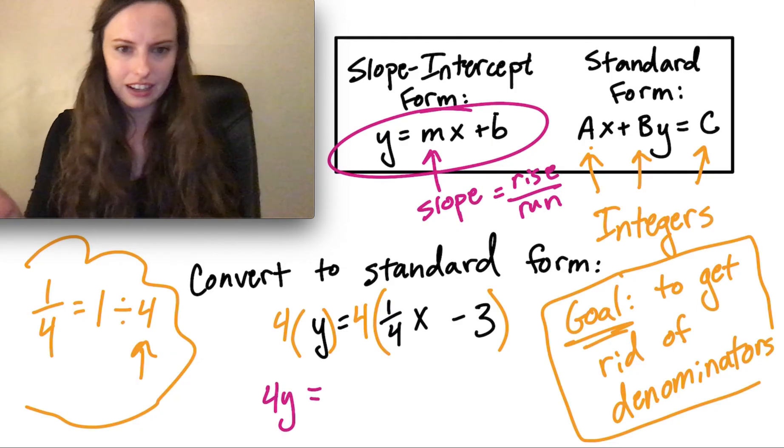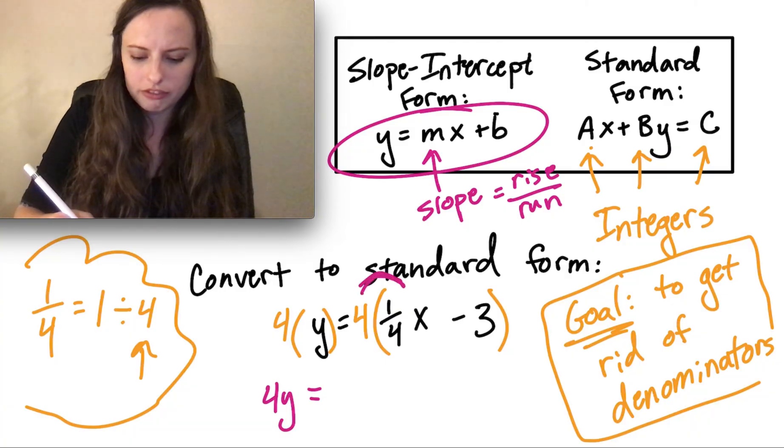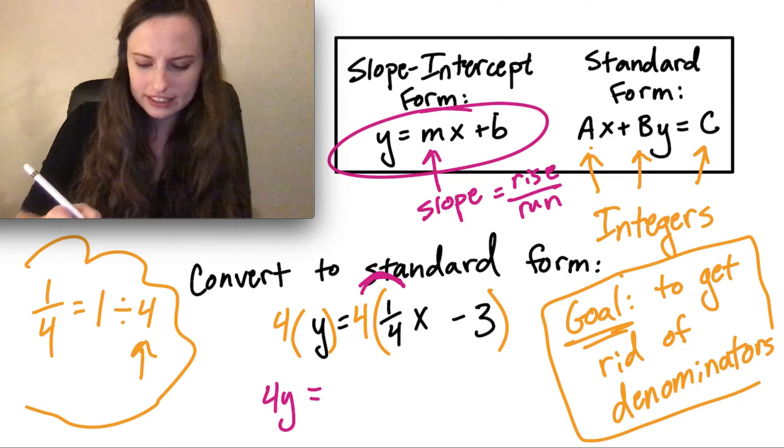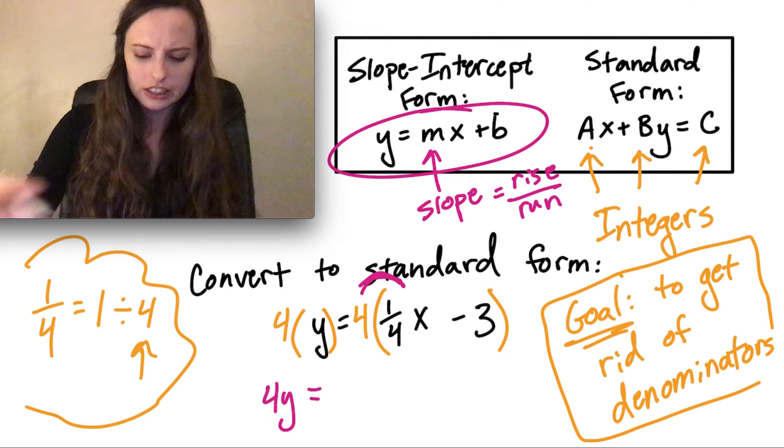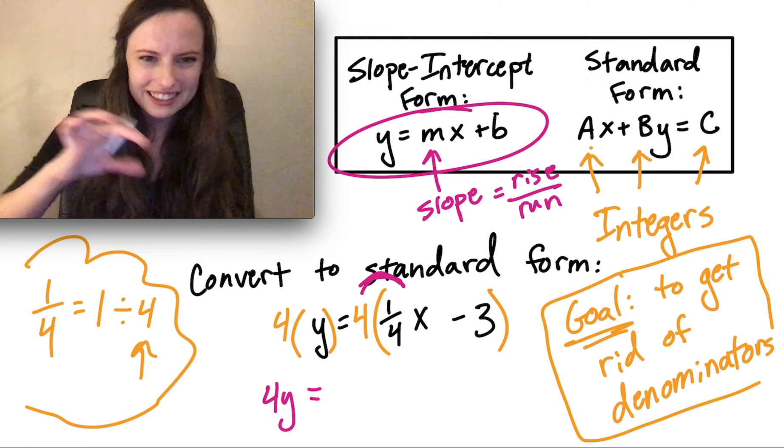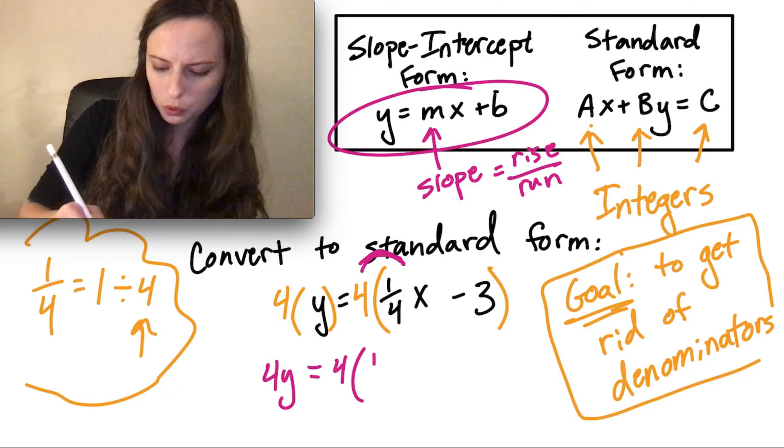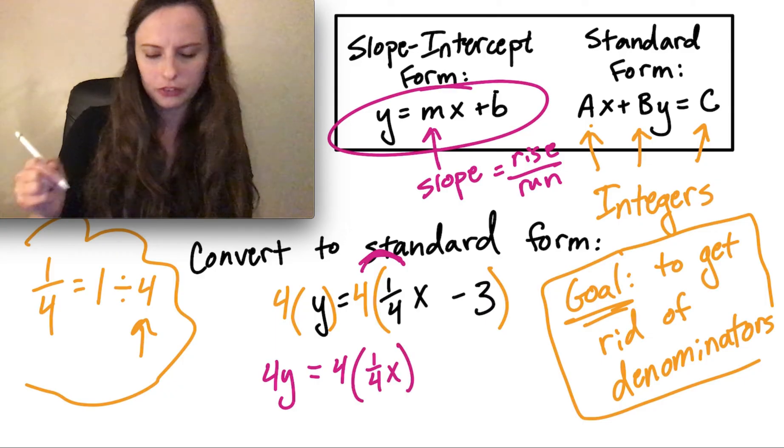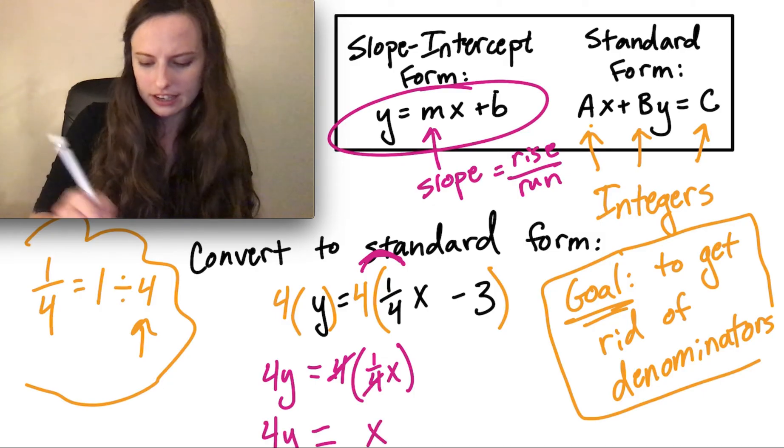And then on the right side, we have 4 times 1 fourth x. Well, right away we can see that 4 times 1 fourth is going to cancel out. Those 4s cancel, giving us just 1x. I'm going to write this all out, though, just so it's really clear. We have 4 times 1 fourth x. And that cancels out. Those 4s cancel out, giving us the x.